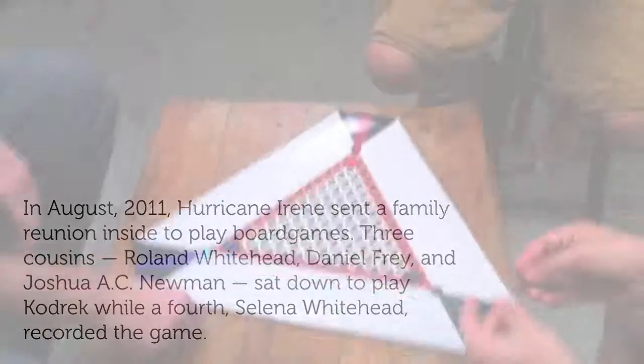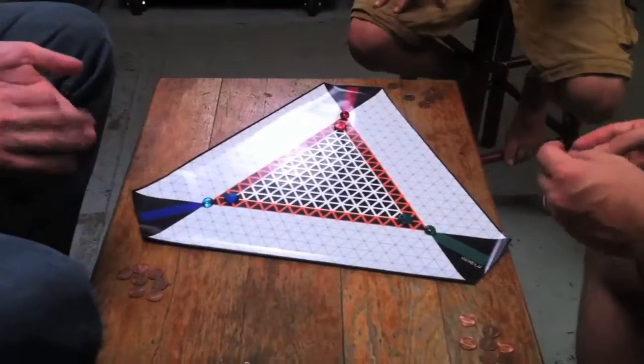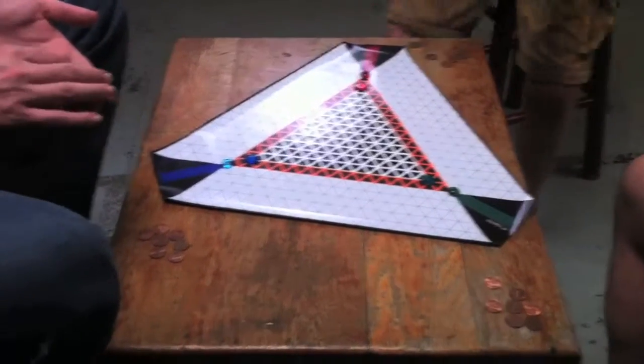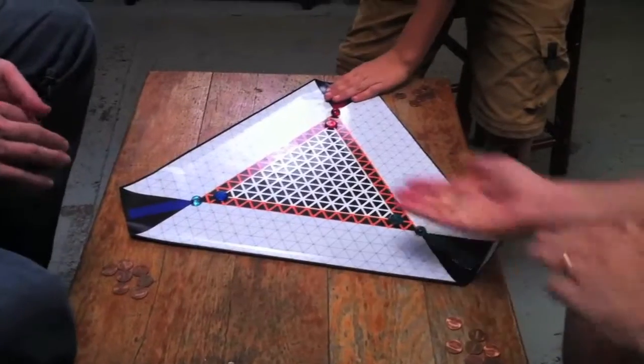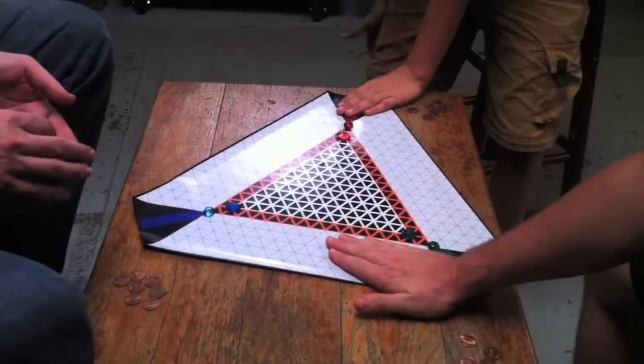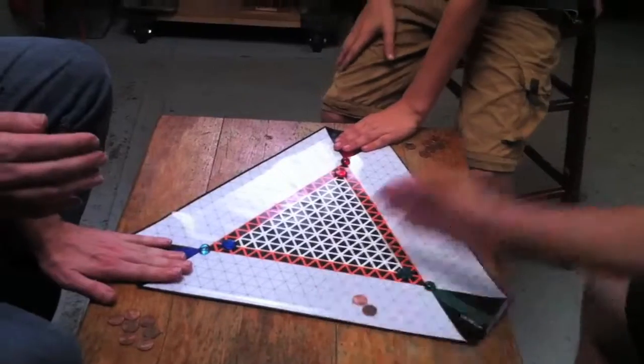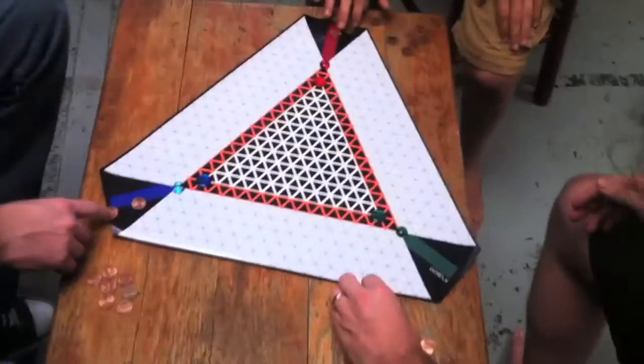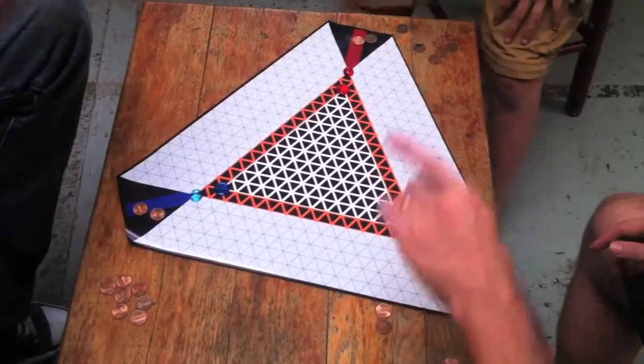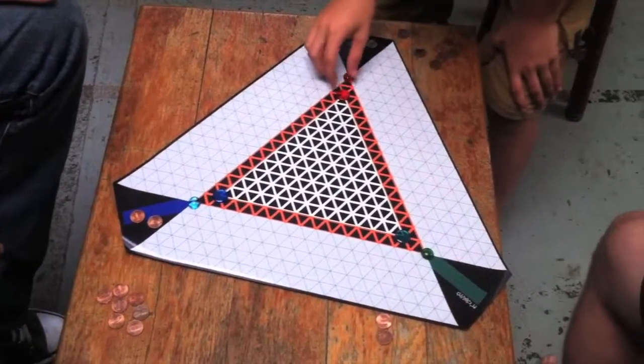Okay, so everybody take two coins, got it, and decide on your move. Okay, who's got the most heads? Two heads there. Two heads. Okay, Roland, you move yourself around.